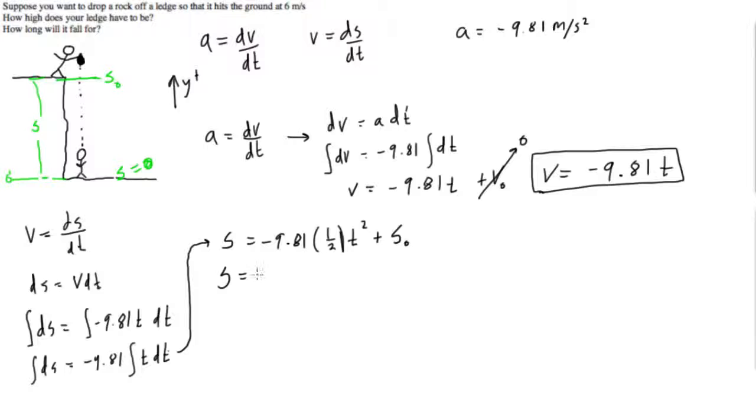I mean getting back on track, s is equal to, this will be negative 4.905 t squared plus s naught. And there we go, so that's going to be our other really important equation.